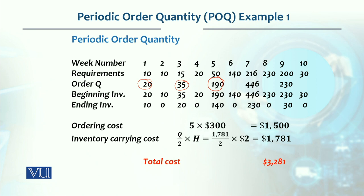This is the beginning and ending inventory. When we order 20 in week 1, we consume 10 units, leaving 10 ending inventory. Week 2 begins with 10 and ends with 0. Week 3 begins with 35, uses 15, leaving 20 ending inventory. Week 4 begins with 20 and ends with 0. Week 5 begins with 190, uses 50, leaving 140 ending inventory, continuing this way through all weeks.